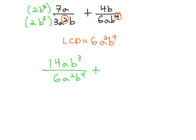Plus, on the second fraction, we already have the 6. We need another a, and we already have b to the fourth. We're simply multiplying by a in the numerator and denominator. This gives us 4ab over our common denominator of 6a squared b to the fourth.